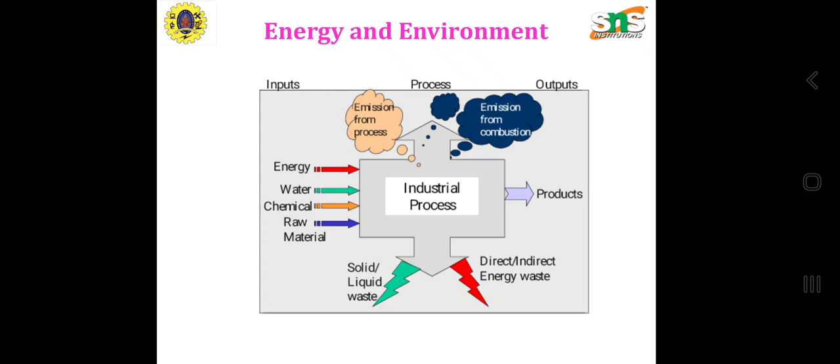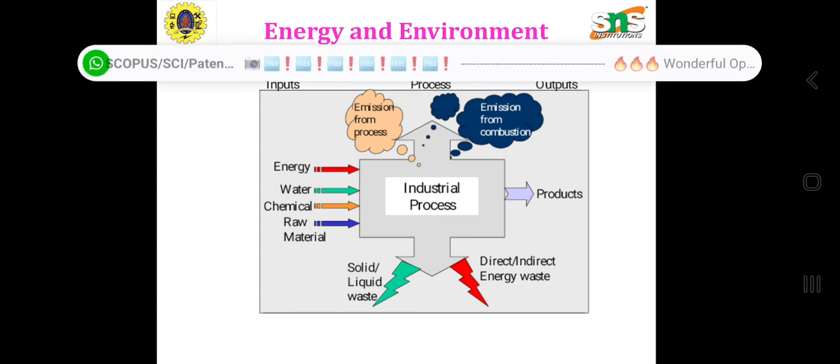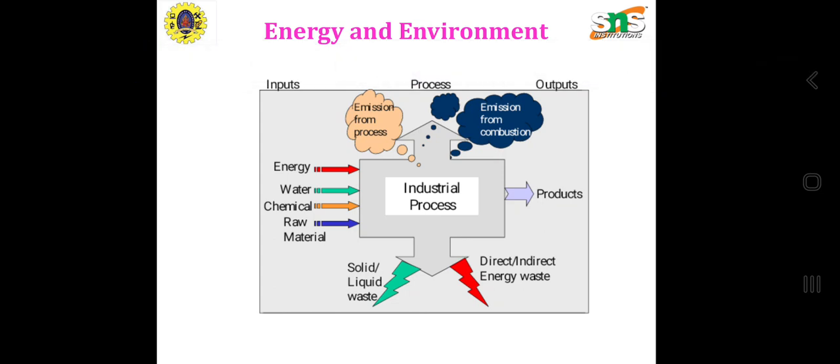For energy and environment, any industrial inputs include energy, water, chemicals, and raw materials. These are given as input to industrial processes which produce products and give us solid, liquid, and gaseous waste during processing. Direct and indirect energy, energy waste, and air emissions from the process also take place. These are the outputs of industrial processing and can be calculated from Sankey diagrams.